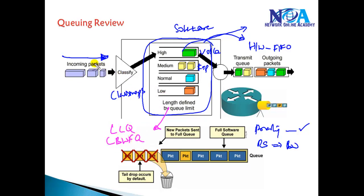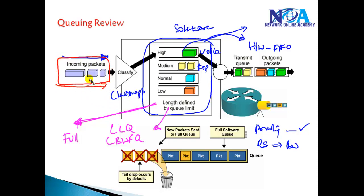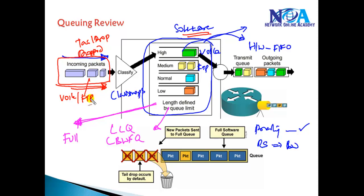In this section we'll look at congestion avoidance mechanisms — specifically, what happens when the software queue is full. Once the software queue reaches its maximum limit, all incoming packets are simply dropped automatically because the queue cannot accommodate more packets. This mechanism is called tail drop.